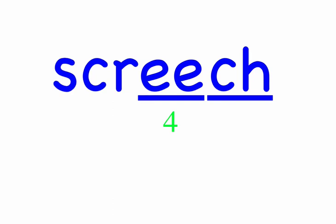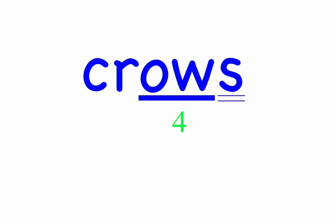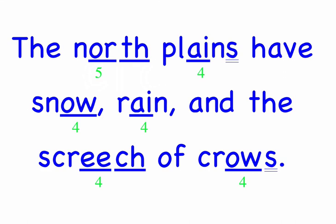Of crows. Crows — four sounds: C, R, O, Z. Crows. The north plains have snow, rain, and the screech of crows. This completes the dictation of sentences from Lesson 321.